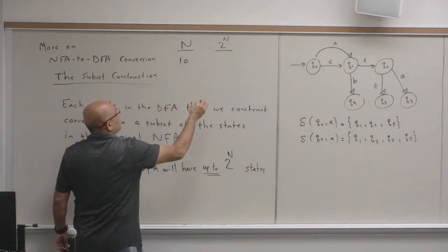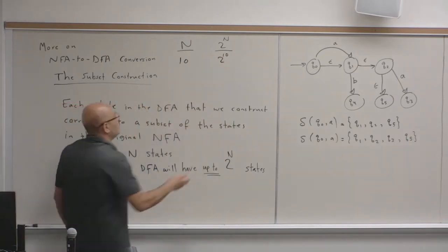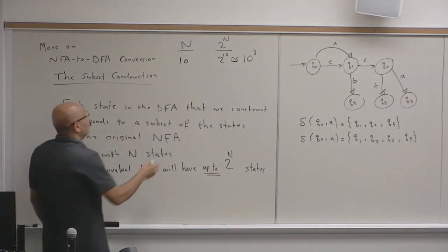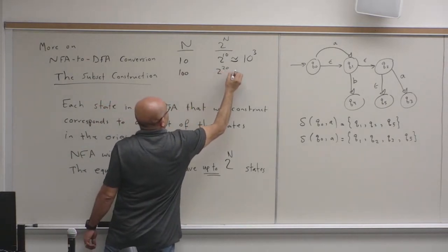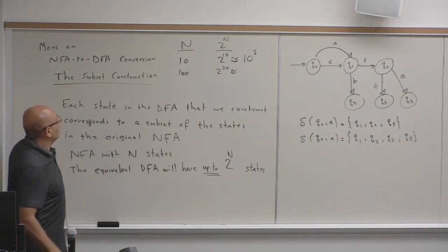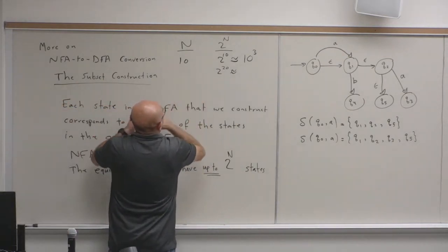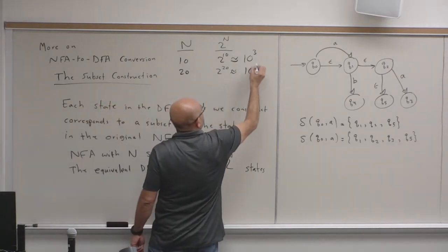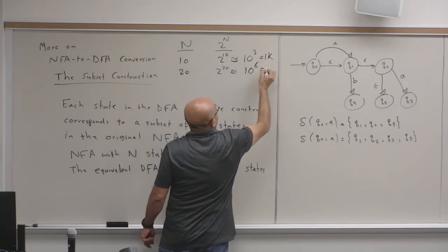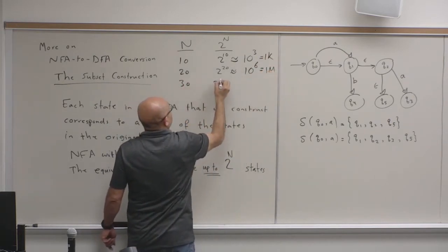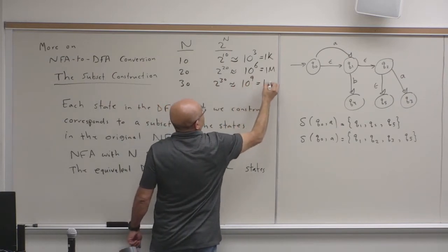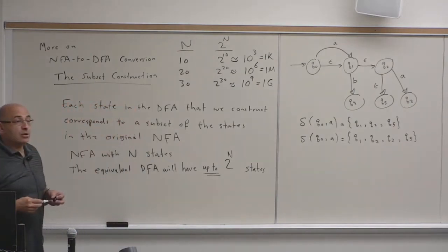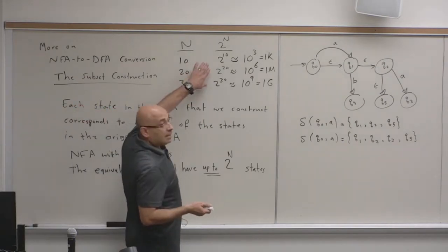If N is 10, two power N is 1K, approximately 10 power 3, exactly 1024. If N is 20, then two power 20 is one mega, approximately 10 power 6, which is a million. At 30, it's two power 30, which is 10 power 9, or one giga. I'm doing this to show you how big the number of states in the equivalent DFA can be.